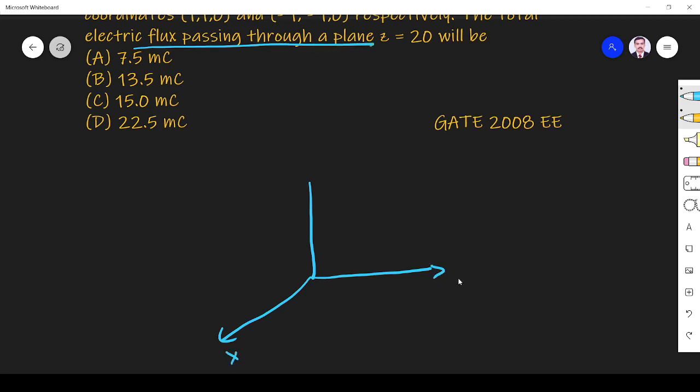So this is x, y, z. The z equals 20 plane will be lying here. We assume that it is the z equals 20 plane. So here z equals 20.